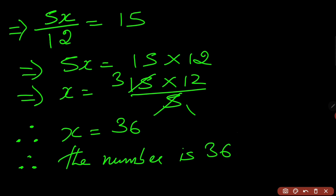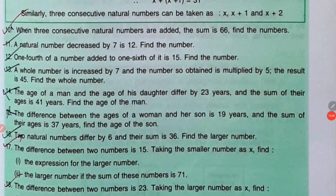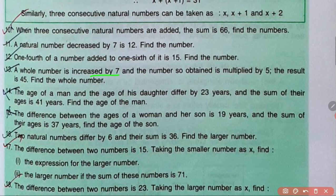I hope you have understood question number 12. Now going to the last sum from Exercise 22D. Question number 13 reads as: a whole number is increased by 7, and the number so obtained is multiplied by 5. The result is 45. Find the whole number. This kind of sum was also done in the first part of the video, let us try to solve this as well.